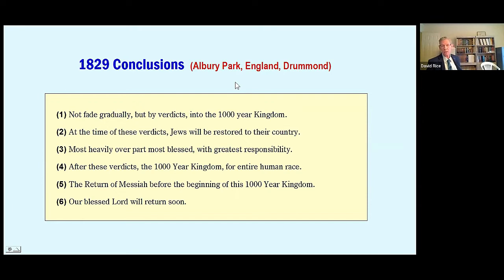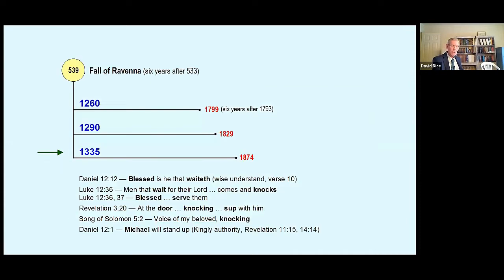Number five, the return of Messiah takes place before the beginning of the thousand-year kingdom. Number six, our blessed Lord will return soon. Sounds to me like the wise were understanding. This is published in 1829. Now you'll find this all in detail in a Herald article from about 2003 or so. You'll find an article that pertains to this on the time of these prophecies. I'll give you the details of that anybody wants to know, but that's where this information can be found.